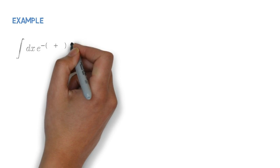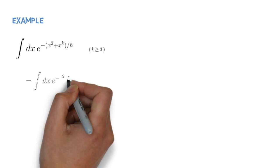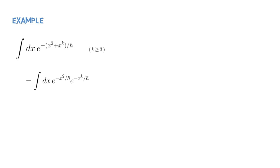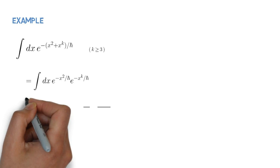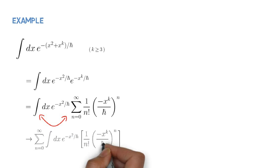The simplest example of the Wick expansion involves the following one-dimensional integral. Here, h-bar is for the time being a positive number, so that the integral converges for k-even and diverges for k-odd. The Wick expansion proceeds by separating the quadratic part from the higher-order part in the exponential, expanding the higher-order part as a Taylor series, and then integrating term by term, that is, formally interchanging the summation with the integration.